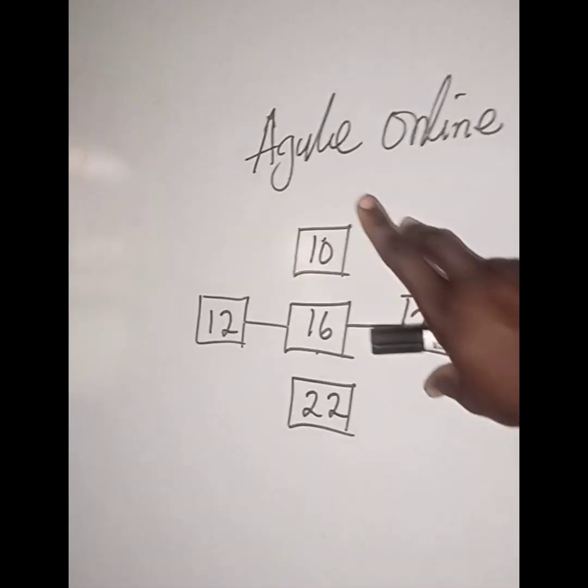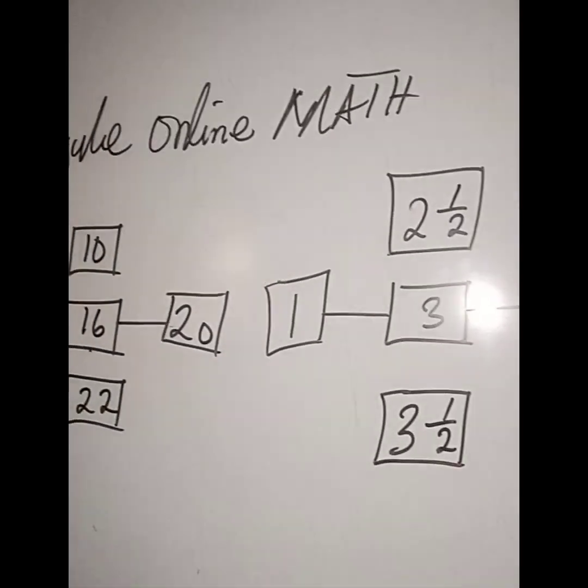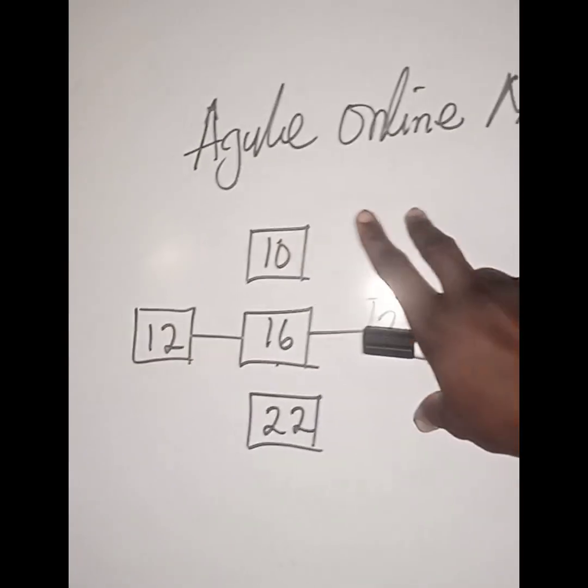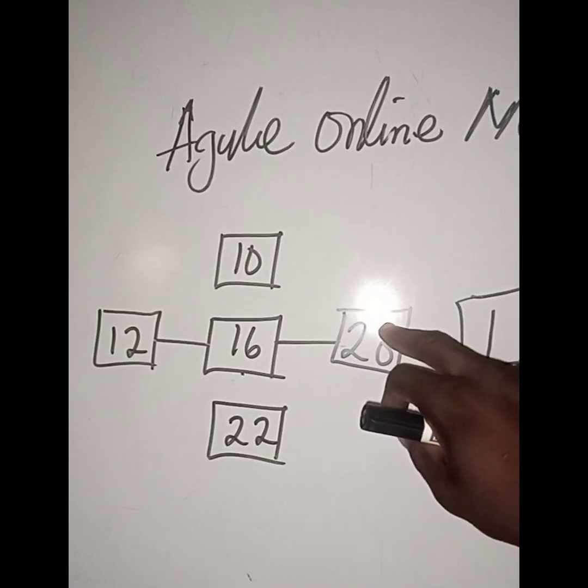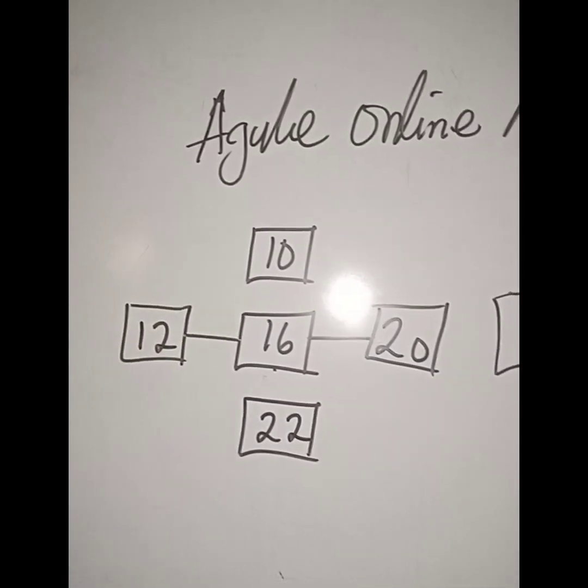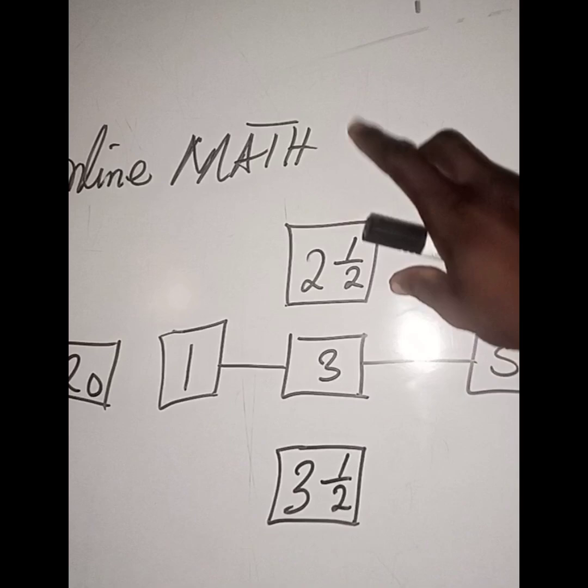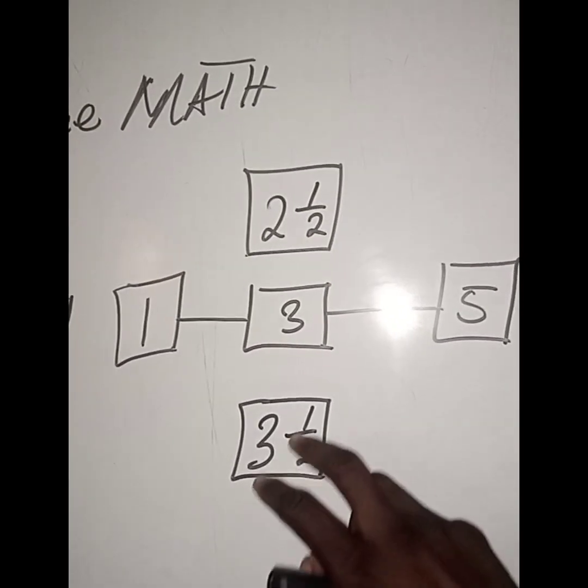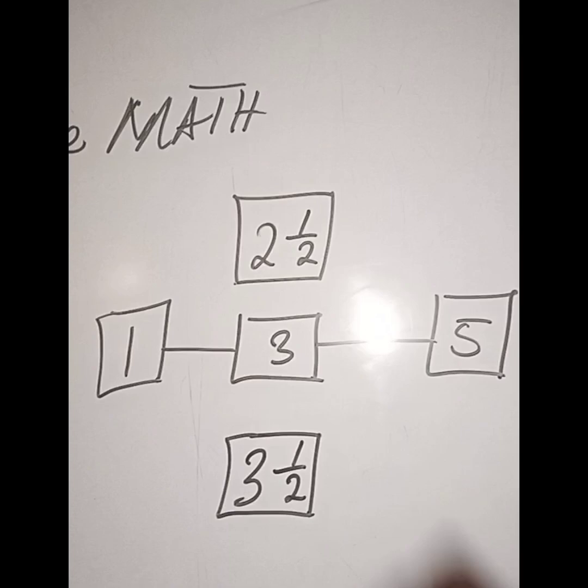So, we have sample 1, we have sample 2. Coming to sample 1, we have 10, we have 22 down, we have 20, we have 12, and 16 in the middle. Sample 2, we have 2 and 1/2 up, we have 3 and 1/2 down, we have 5, we have 1 and 3 in the middle.